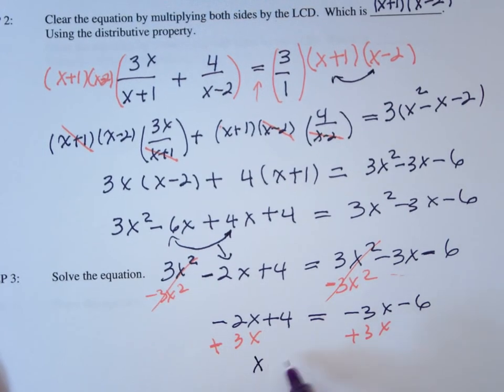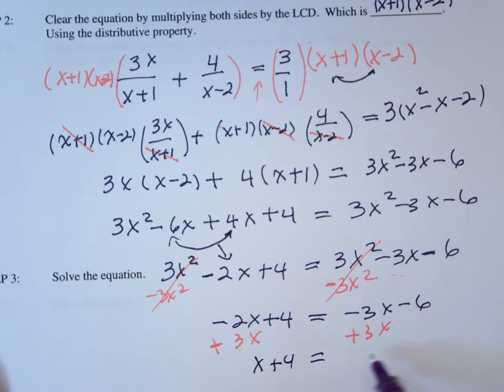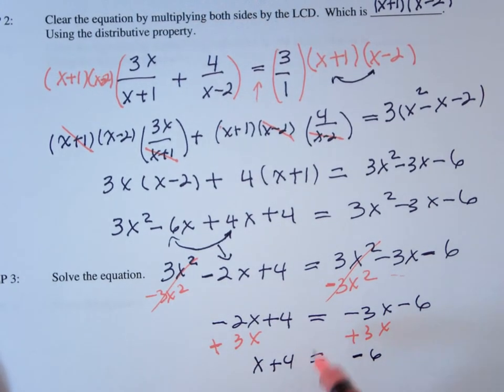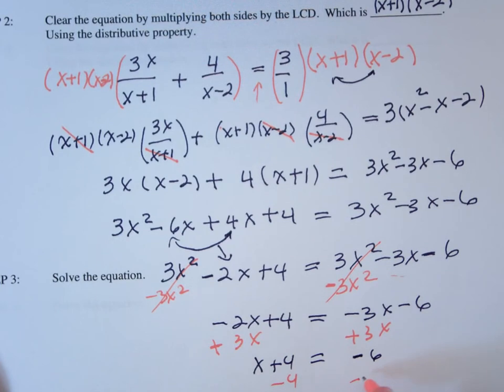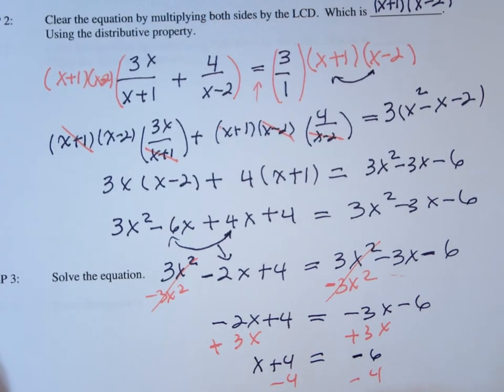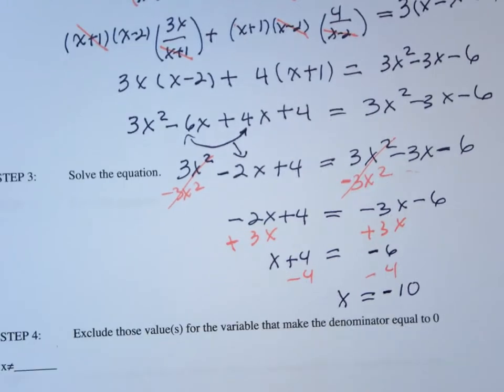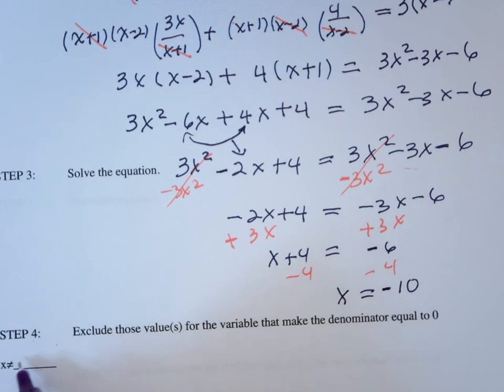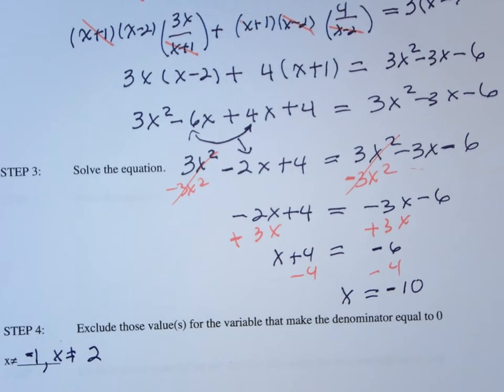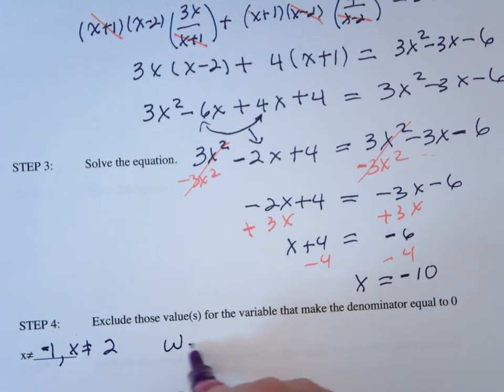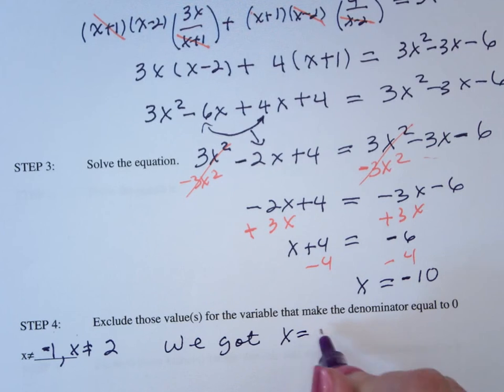So x plus 4 equals minus 6. Subtract 4 from both sides. Now, we know that x cannot be negative 1 and x cannot be 2, but what did we get? Negative 10. So we got x equal negative 10.